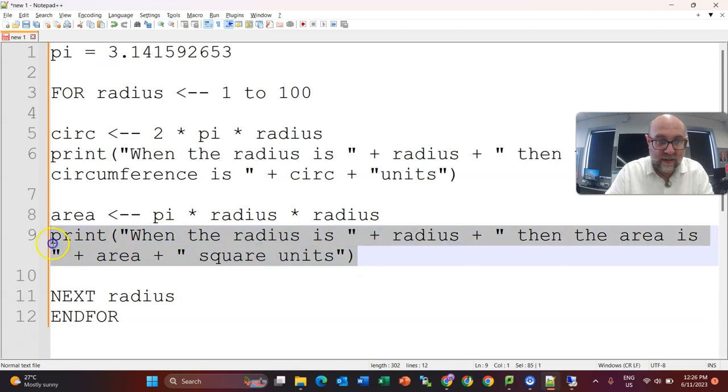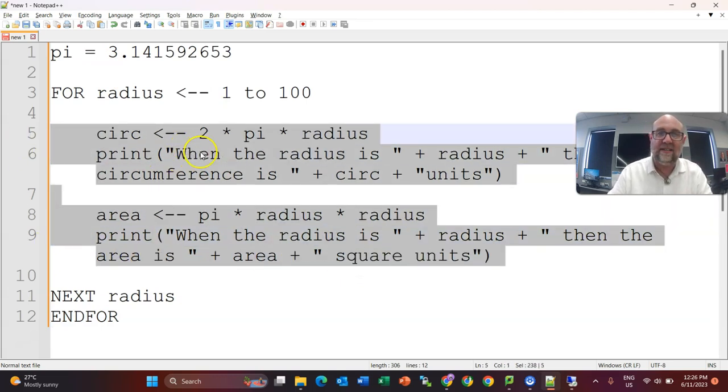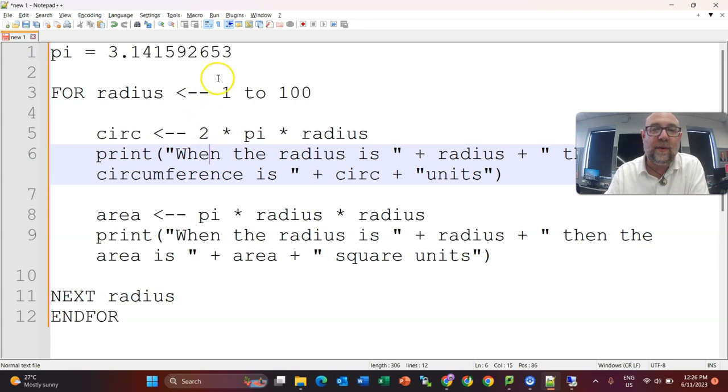The only thing really left to do is to indent that, and so now what this program will do is it'll go through with radius equaling 1, it'll say when the radius is 1, then the circumference of this and the area is this, and then it will have when the radius is 2, when the radius is 3. I could even count this by smaller increments than 1, I could have it running every .1 by saying that step .1.